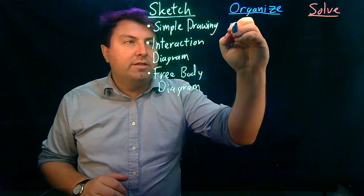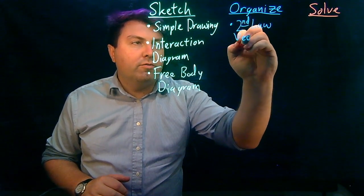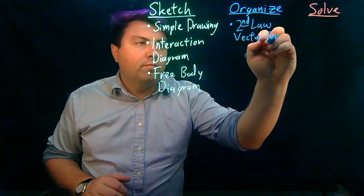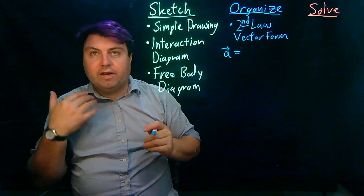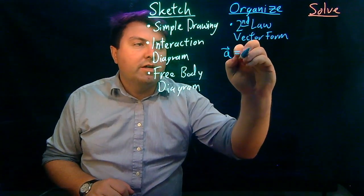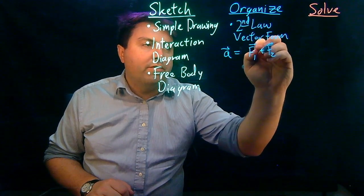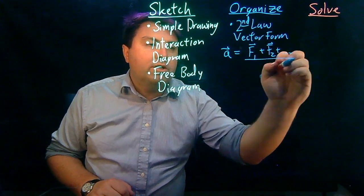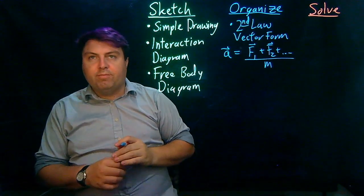So our organizing step, we start with Newton's second law in vector form. Newton's second law in vector form always starts with our acceleration as a vector equals, and then we're just adding up all of our individual forces. So whatever forces we have, we're just listing them from the free body diagram and then divide the whole thing by mass.